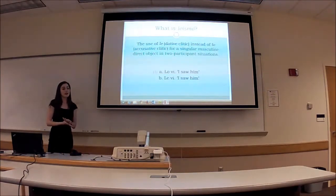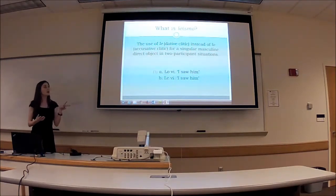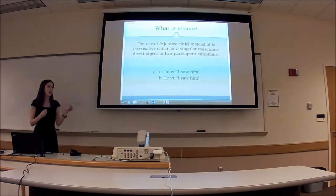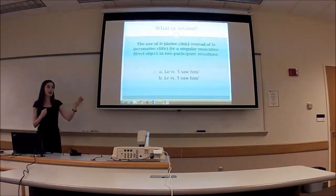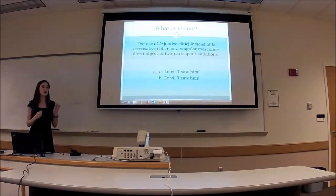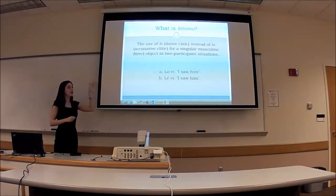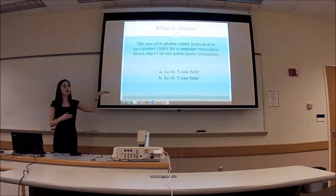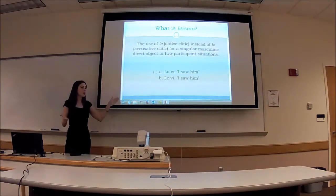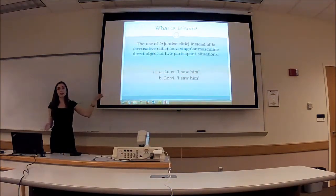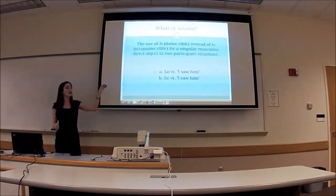So what is leísmo? Previously it's been thought of in two-participant situations when there's a singular masculine direct object — that's what you're going to see in Spain. We have this use of the dative clitic, which is 'le', instead of the accusative clitic, which is 'lo', for direct objects. It seems kind of weird that we're using the marker for the indirect object to mark a direct object. Here's the example: 'Lo vi' — I saw him. 'Le vi' — I saw him. They both mean the same thing, yet the first uses the accusative and the second uses the dative. We refer to this as dialectal leísmo.